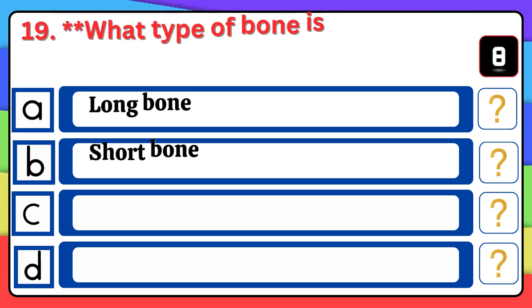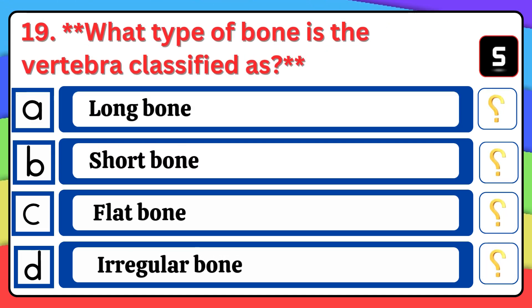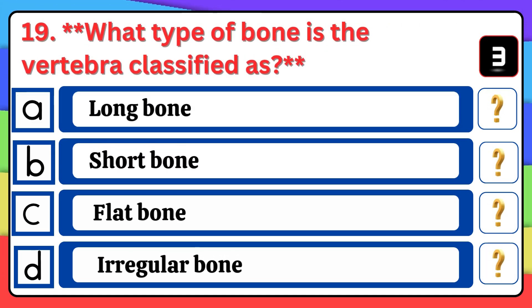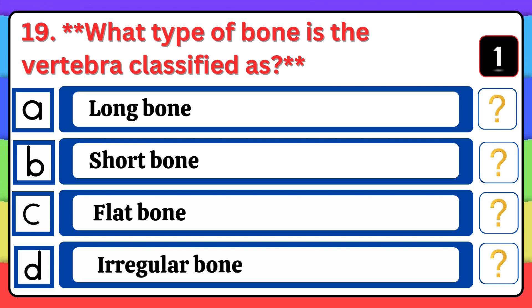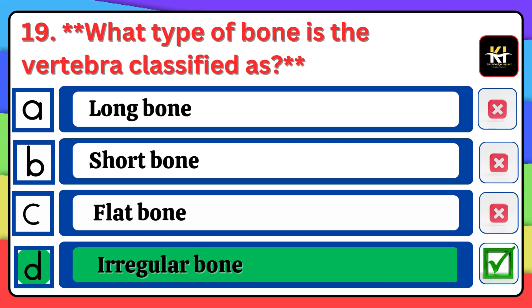Question number nineteen: What type of bone is the vertebrae classified as? Correct answer: Option D — Irregular bone.